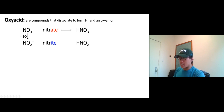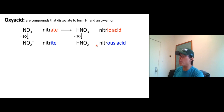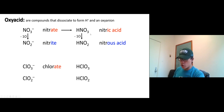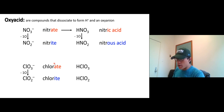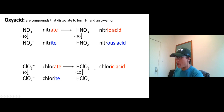For the chlorine series: starting from chlorate, lowering the oxygen count by one gives chlorite. Chlorate as an acid becomes chloric acid. From chloric acid, going to the lower-oxygen version gives us chlorous acid. So: chlorate → chlorite (anions), and chloric acid → chlorous acid (acid forms).